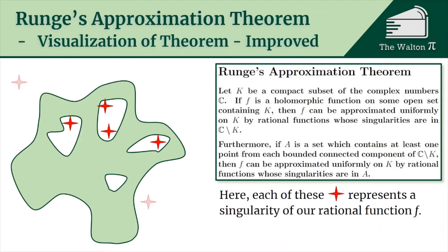Because the two points on the outside are not in a bounded component — they are in an unbounded component of the complement — we can remove those singularities. We only need singularities in the bounded connected components of the complement. So we can do a little bit better than we had thought: the singularities only need to lie in those bounded connected components.